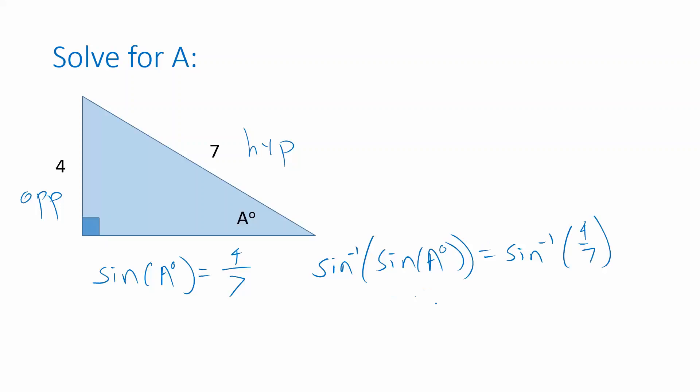Since sine of A degrees and 4 sevenths were the same value, the outputs you get from plugging them into the sine inverse function will also be the same. Because A is a degree measurement between 0 and 90 degrees, sine inverse and sine here basically cancel each other out, leaving you with just A degrees.